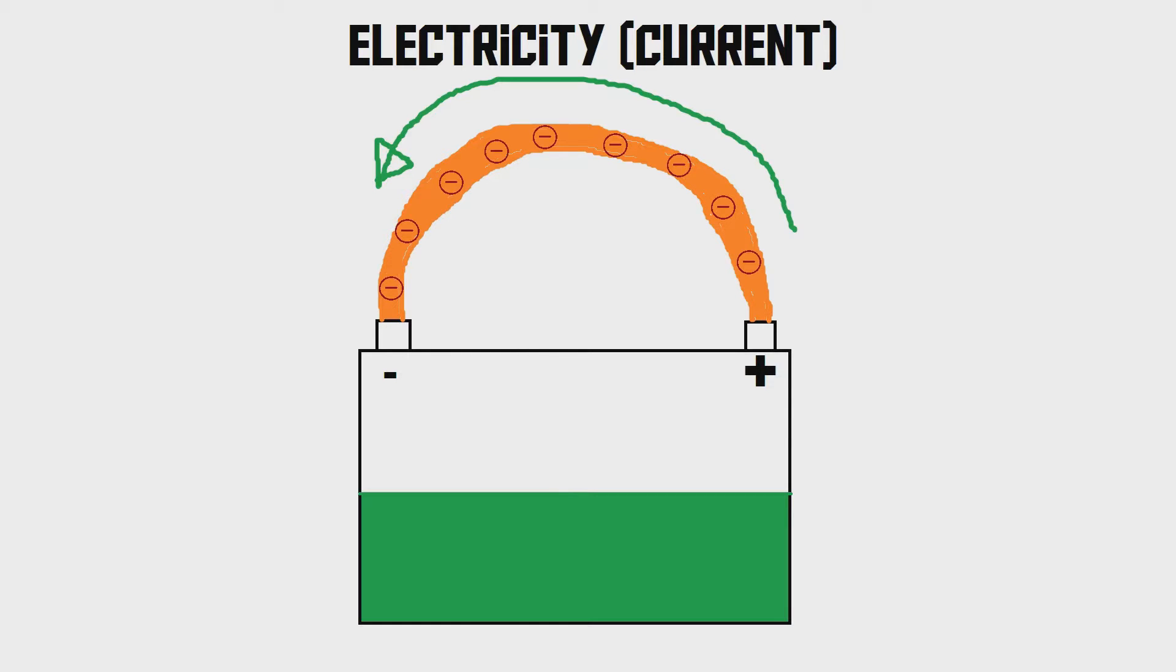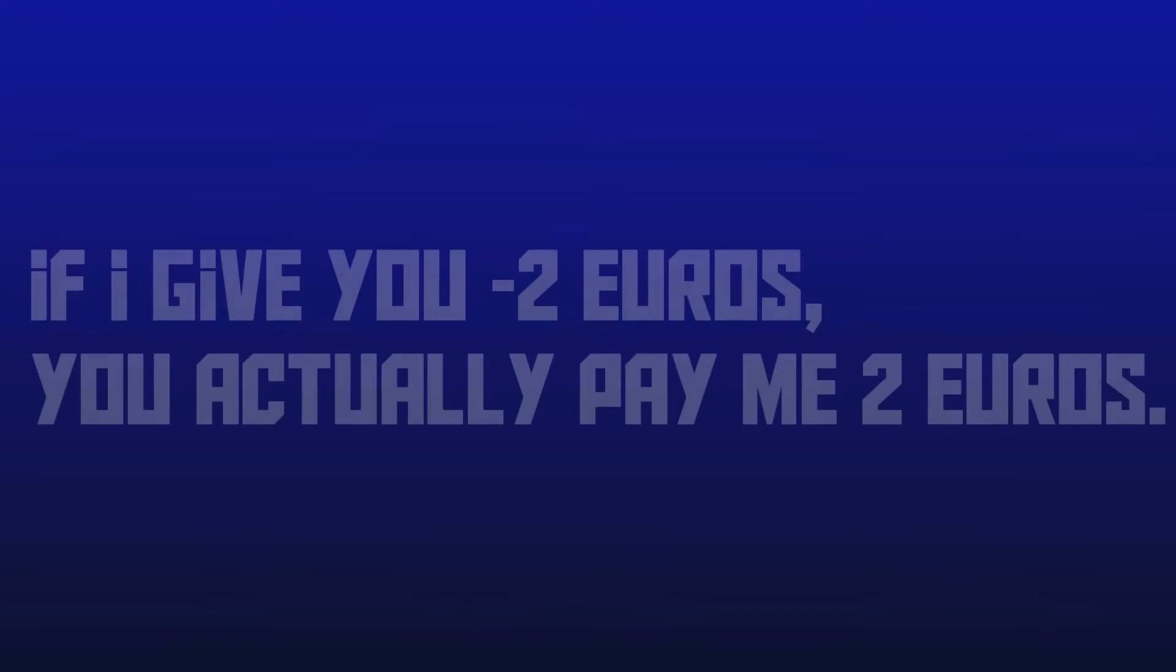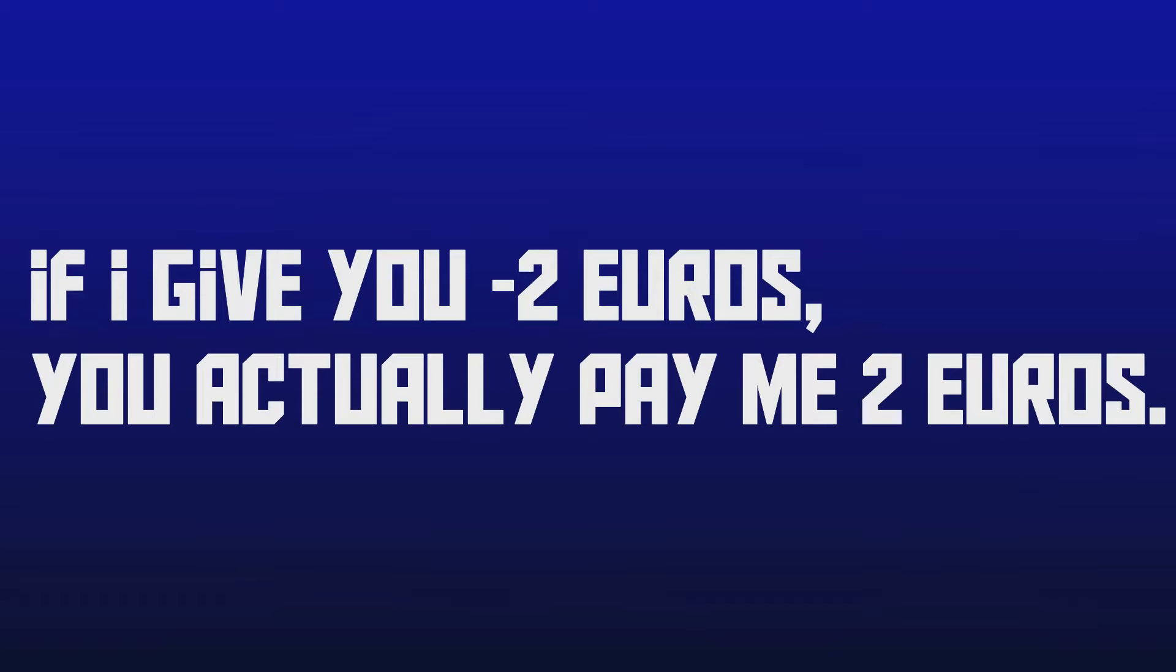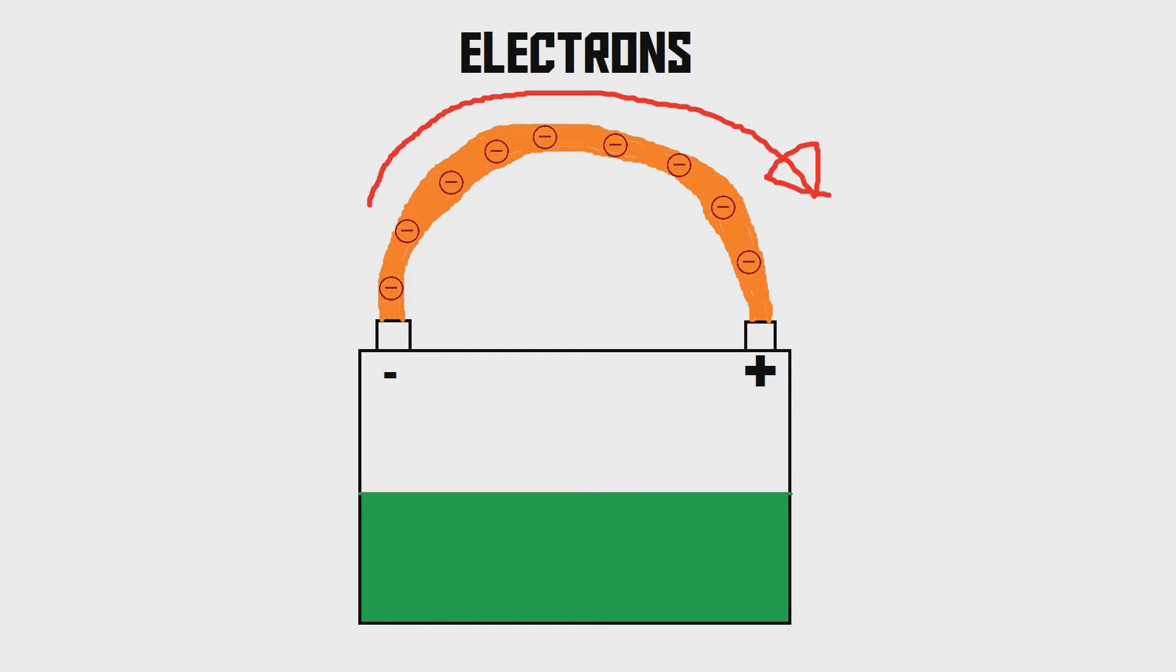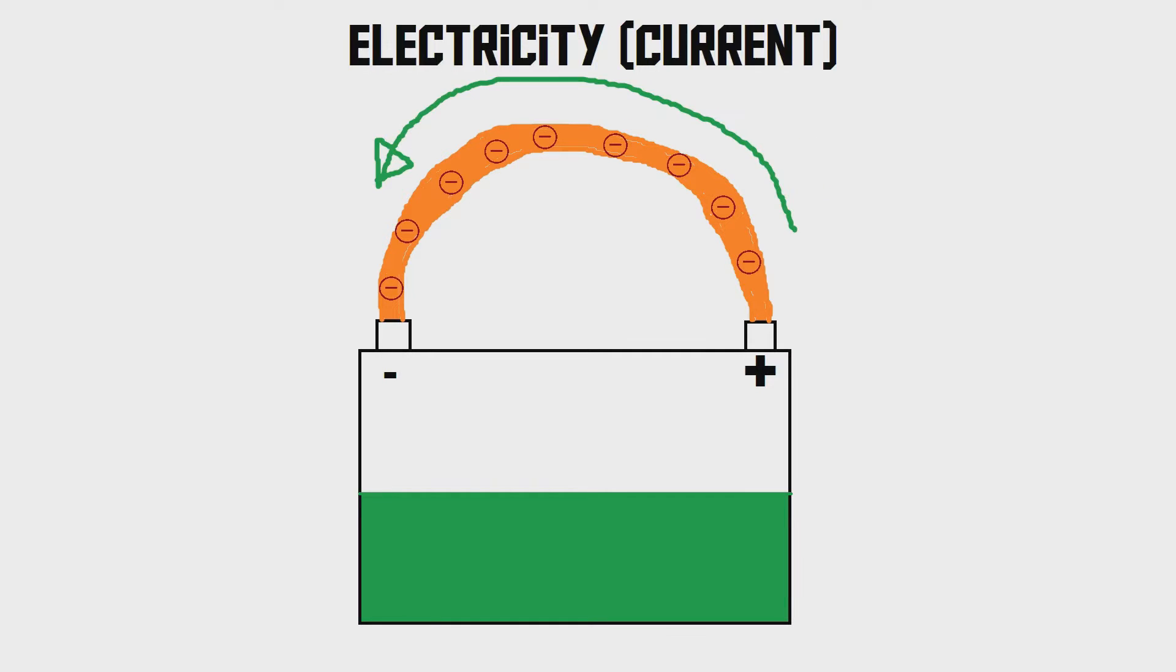Imagine that there is a minus two euro coin, so there is a coin that is worth minus two euros. And I gave the coin to you. Then you are actually paying me two euros, aren't you? So, now that we know that electrons are flowing in the opposite direction of the actual current, we can take a look at how a capacitor works.